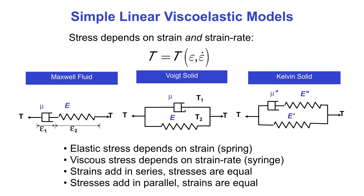In parallel, stresses add. So in the Voigt solid, the stress in the dashpot adds to the stress in the spring to give the total stress, t1 plus t2, whereas the strains are the same in each element.